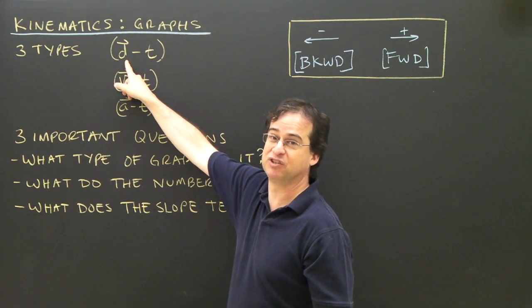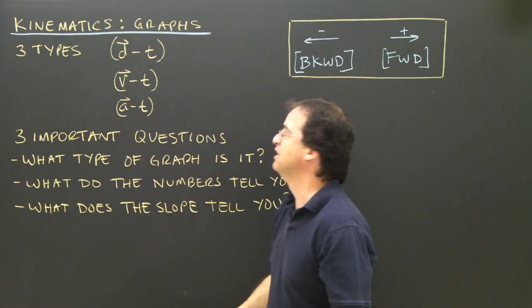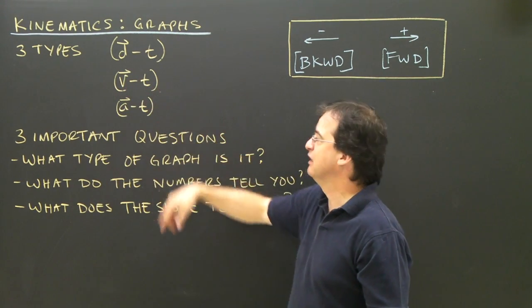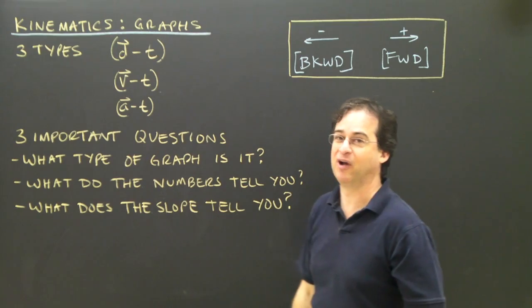This d will represent the position of the object at any given time. The other type of graph we're going to look at is a velocity time graph, and the third type of graph we're going to look at is an acceleration time graph.